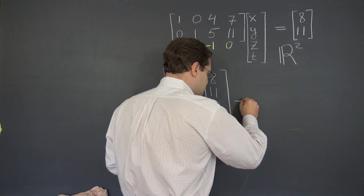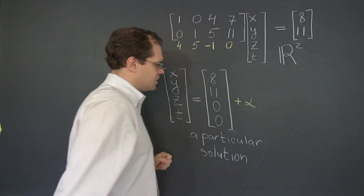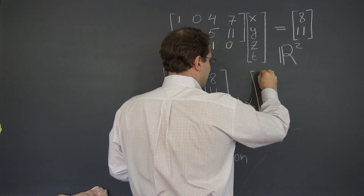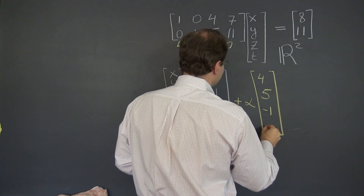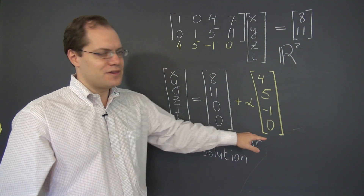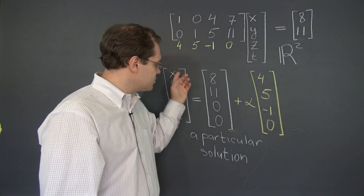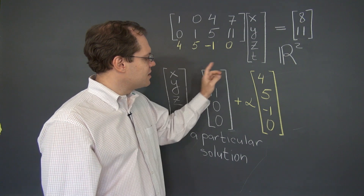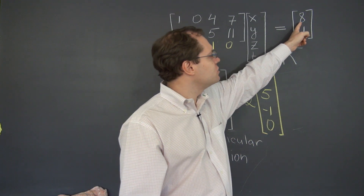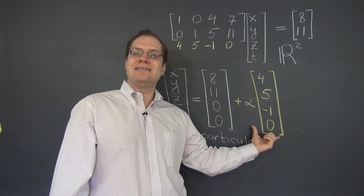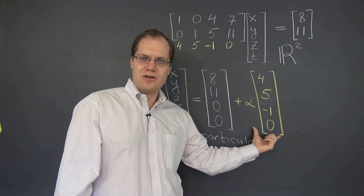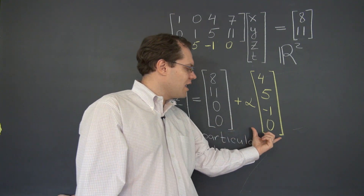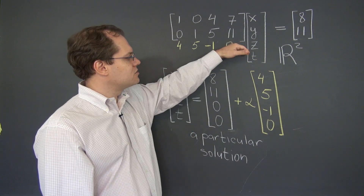We can add this non-trivial linear combination in any proportion to the solution we have already found. So we write it as a column (4, 5, -1, 0). By adding these proportions of columns to our solution, we are not altering the result of the linear combination. These columns in proportions captured by this expression will still produce 8 and 11, because this is basically adding zero — adding a fancy zero. We're not changing the value of the linear combination, but we are changing its coefficients. That's why adding this helps us capture all the possible solutions to this equation.